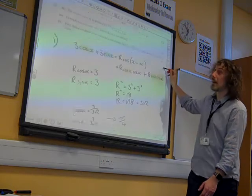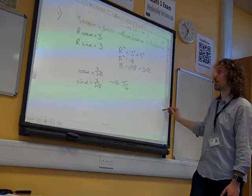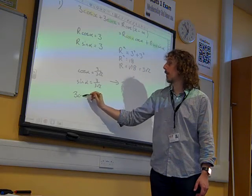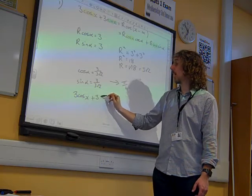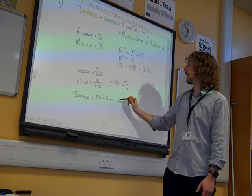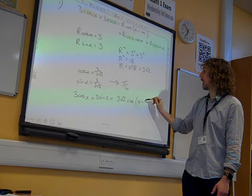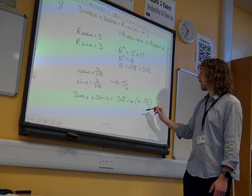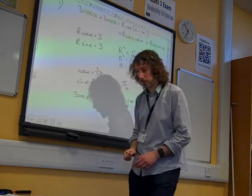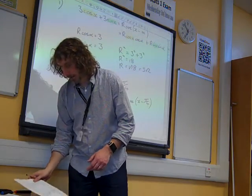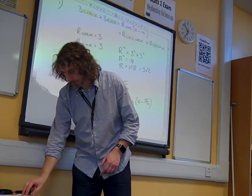There we go. And it did say, express it in that form. So I'm going to finish off my question by actually doing what I was asked. So that is 3 root 2 cos(x - π/4). Great. And that should give us all the marks that we need. Next, it said...